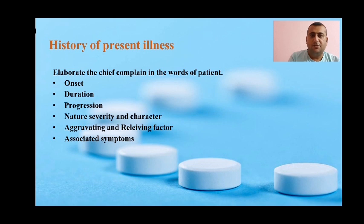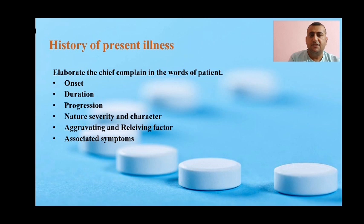In history of present illness, what we do is elaborate the chief complaints in the words of the patient. You will explain each chief complaint under headings like onset, duration, progression, nature, severity and character, as well as aggravating and relieving factors, and associated symptoms. If you have more than one chief complaint, each needs to be elaborated under these headings in history of present illness.